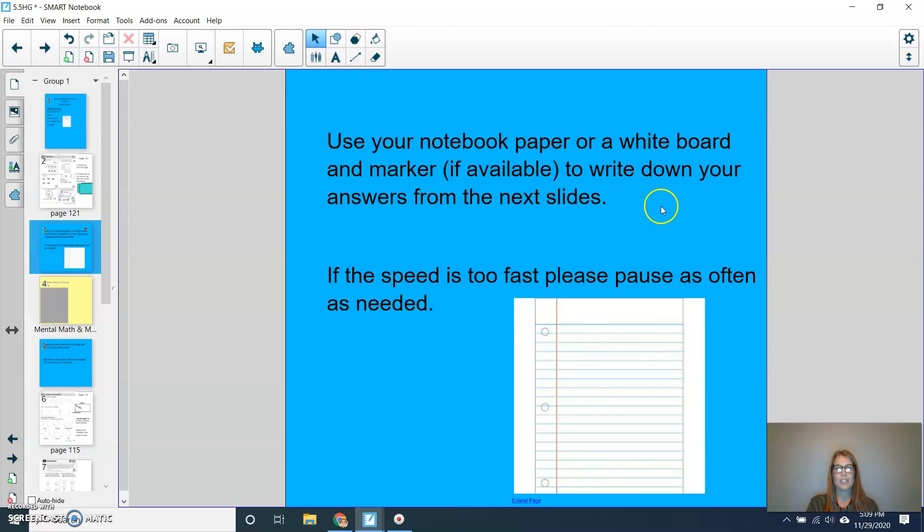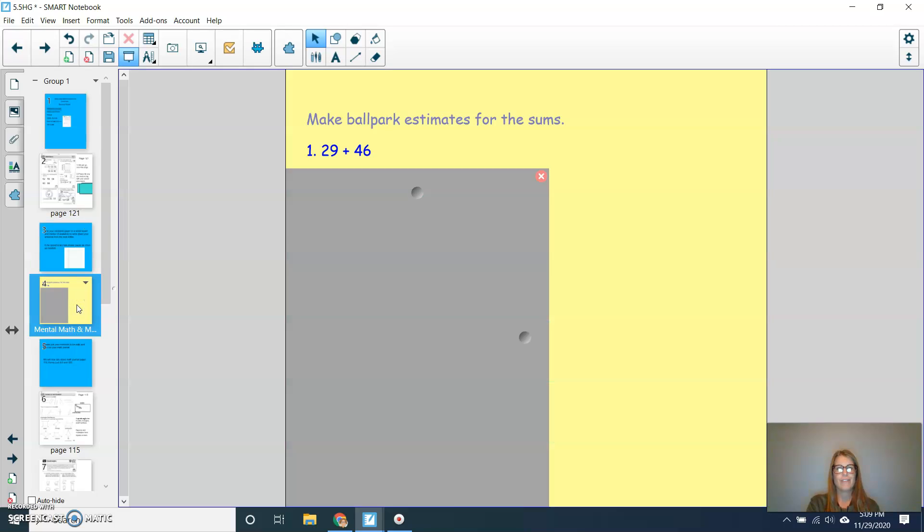For the next questions, please use either notebook paper or a whiteboard and marker if available. If the speed is ever too fast, please pause as often as needed. So the first thing we're going to do is review a little bit of the ballpark estimates. So you don't have to find the actual answer. We just want to find that nice, easy number that we can do in our head. So we're rounding these to the nearest 10.